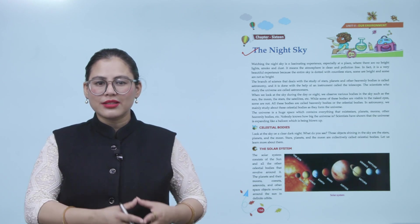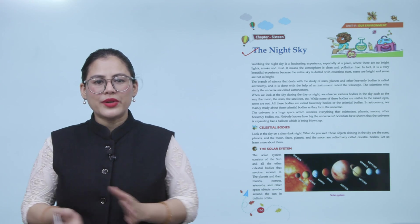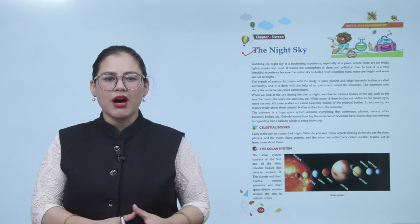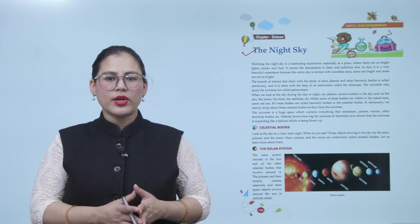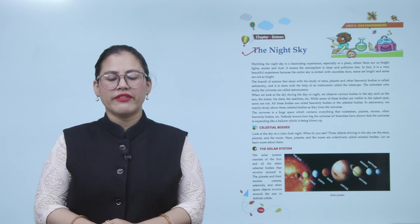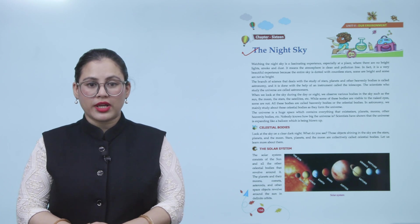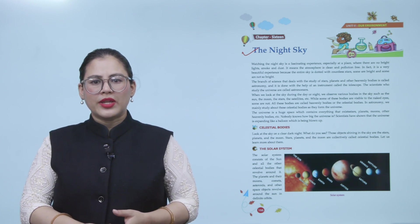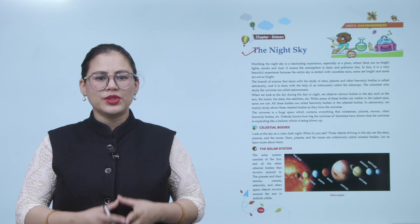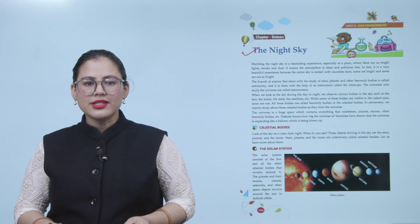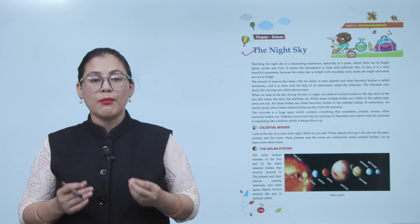The scientists who study the universe are called astronomers. When we look at the sky during the day or night, we observe various bodies in the sky such as the sun, the moon, the stars, the satellites, etc. While some of these bodies are visible to the naked eye, some are not. All these bodies are called heavenly bodies or celestial bodies. In astronomy, we mainly study about these celestial bodies as they form the universe. The universe is a huge space which contains everything that exists: stars, planets, moons, other heavenly bodies, etc. Nobody knows how big the universe is. Scientists have shown that the universe is expanding like a balloon which is being blown up.